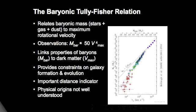The baryonic Tully-Fisher relation is an observed and fundamental relation between the properties of disk galaxies. It relates the baryonic mass of the galaxy — the mass of the stars, gas, and dust — to the maximum rotational velocity. Observationally, we see that the higher the baryonic mass of a galaxy, the higher its rotational velocity. This follows a fairly straightforward power law: baryonic mass is about 50 times Vmax to the power of 4.